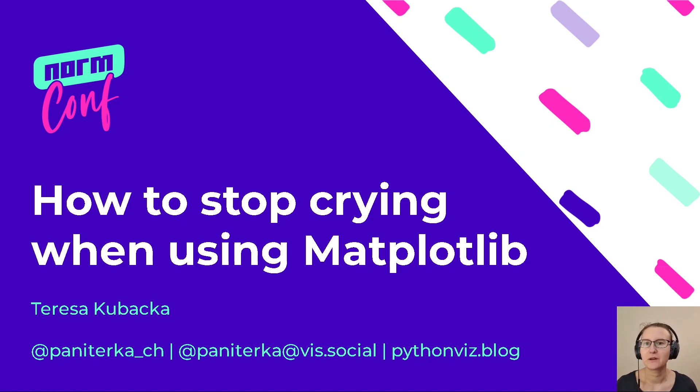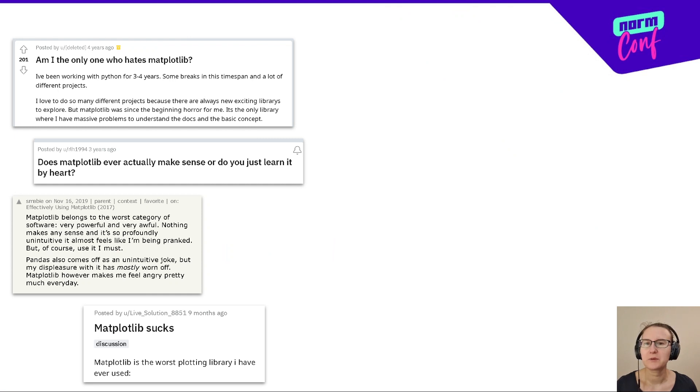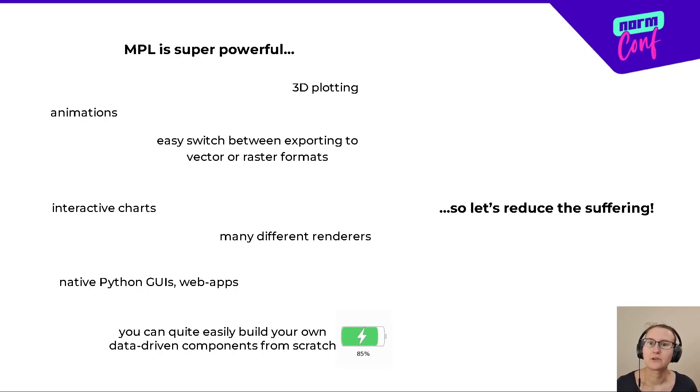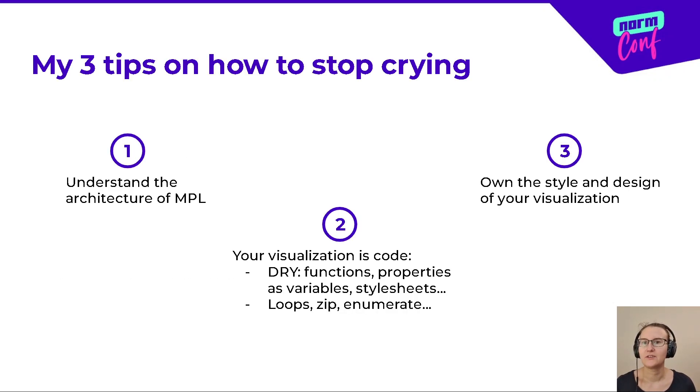I am not affiliated with Matplotlib, but I've been using it almost daily for the past few years. And I notice that people are quite unhappy with it. Given that the majority of data scientists use it regularly, it sums up to a lot of suffering. Yes, Matplotlib is not the easiest, but it is super powerful and has many amazing functionalities. So, how can we reduce the amount of suffering? These are my three tips on how to stop crying.